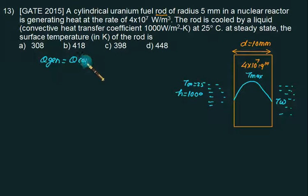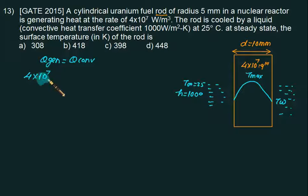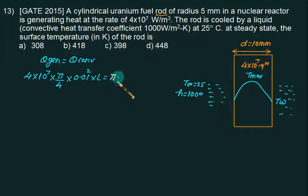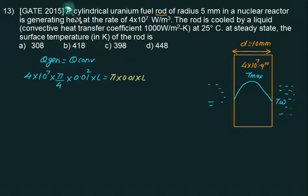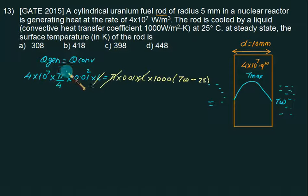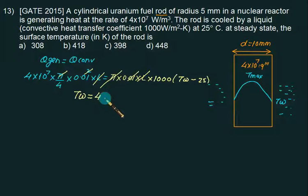We want to find the surface temperature T_W. Using the law of conservation of energy, Q_generation equals Q_convection. Q‴ × (π/4 × D² × L) = π × D × L × H × (T_W − T∞). Here D=0.01 m, H=1000, and T∞=25°C. L cancels, one π cancels, and one D also cancels, allowing us to calculate T_W. The wall temperature comes out to 125°C, and since the answer is required in Kelvin, it is 398 K. Choice C is correct.